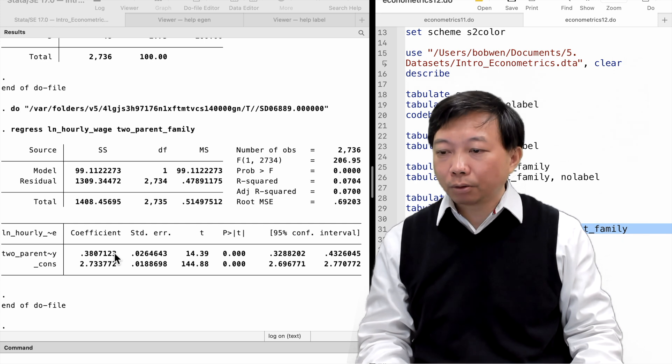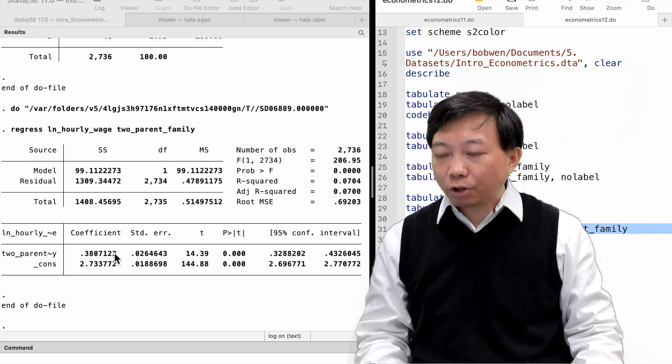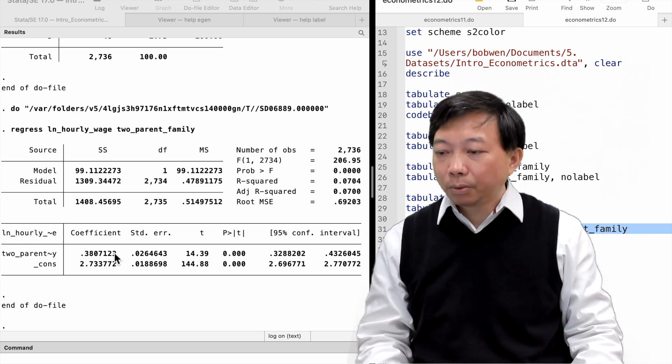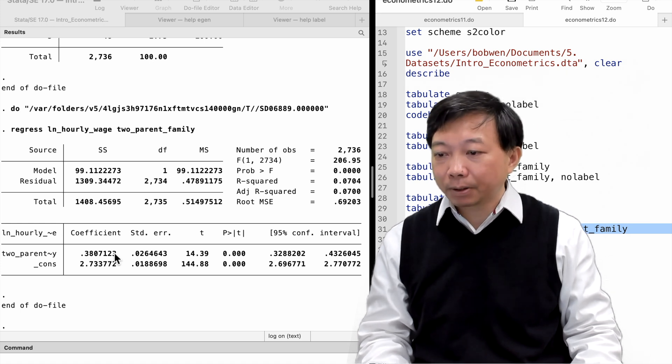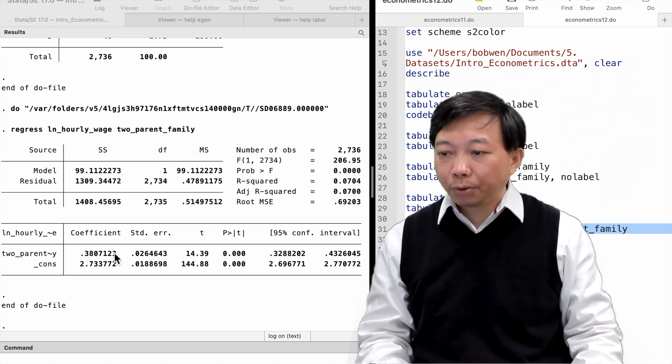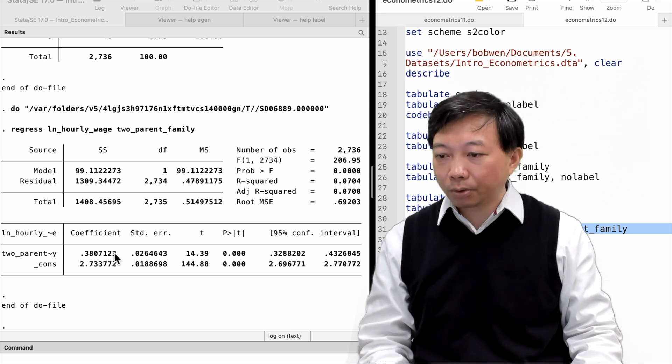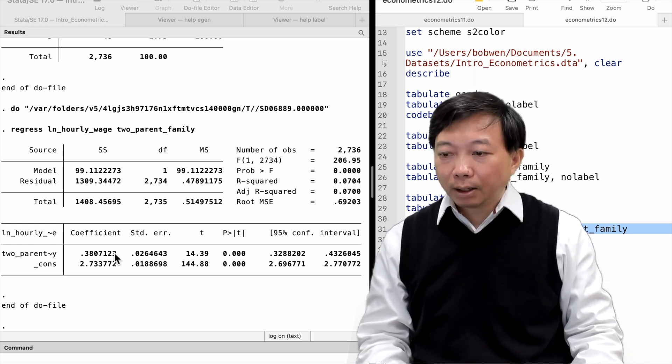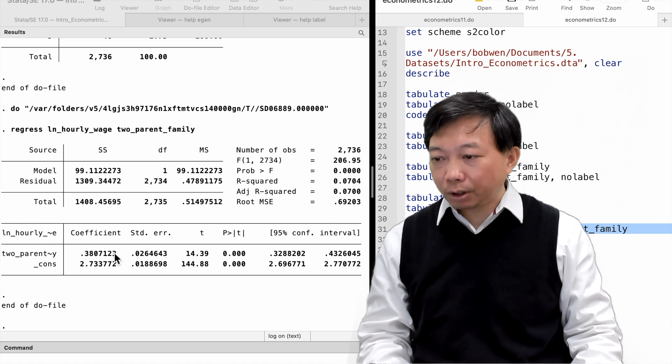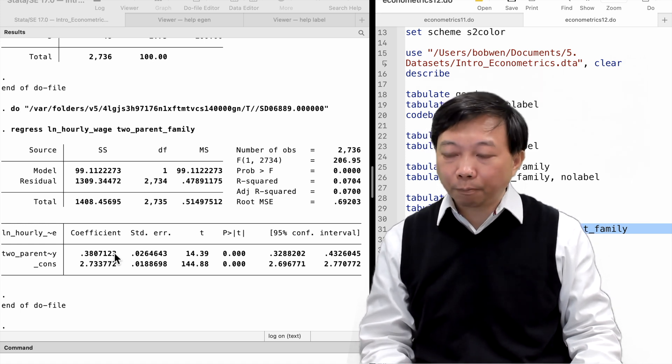it suggests that workers who grew up in intact families earn 38% more than workers reared in separated households on average. The estimate is the average difference in the earnings between these two groups of people.